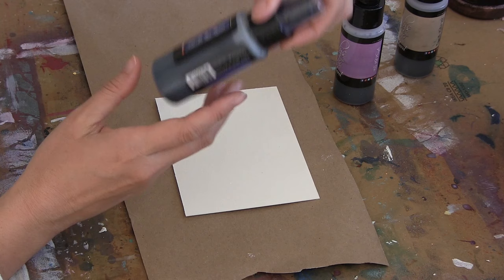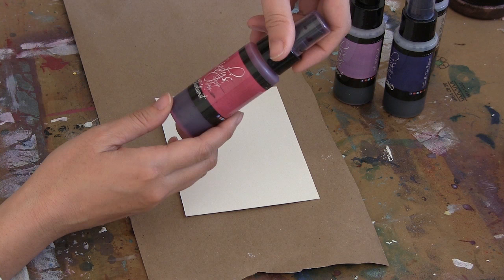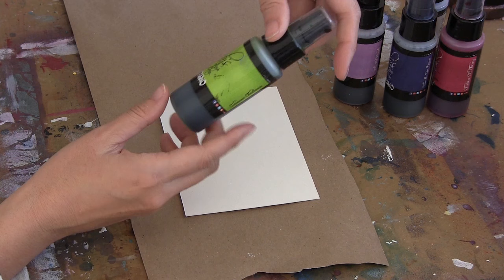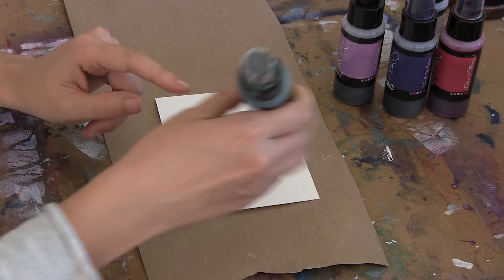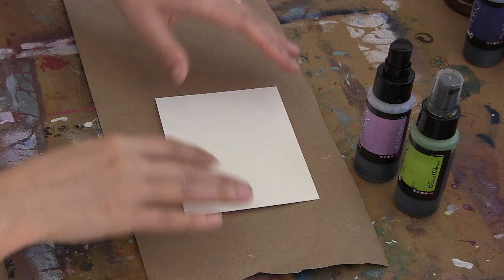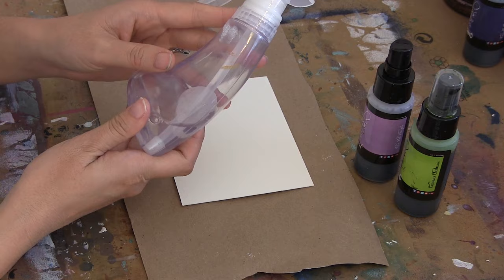So we have Teapot Purple and Down the Rabbit Hole and Tweedledee Denim and Cheshire Cat Cherry. And my favorite of the bunch in this month's kit, Curiouser Chartreuse. So I'm going to use the Curiouser Chartreuse and the Teapot Purple together.